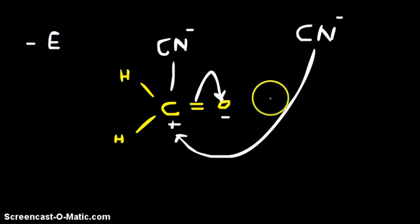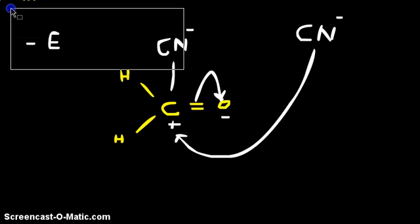This whole process itself is called minus-E effect. In this process, the reagent attacks the part which is opposite to the direction of the flow of pi bond or the electron pair. So that's basically everything about the electromeric effect.